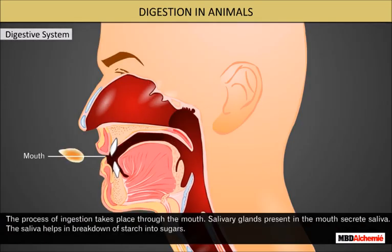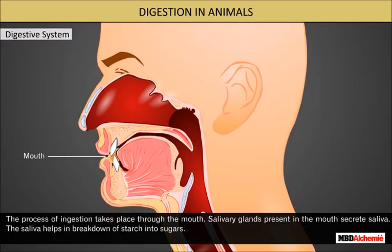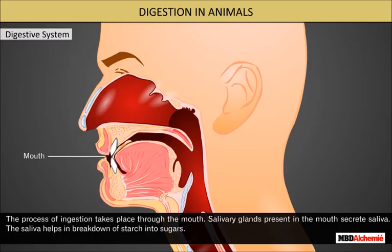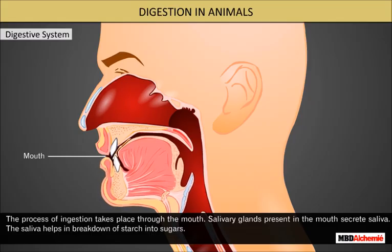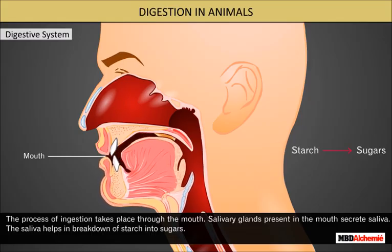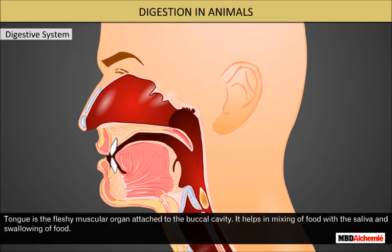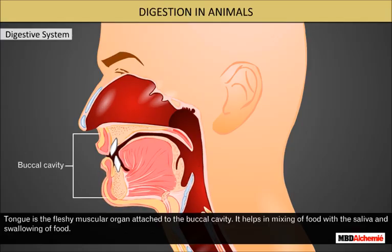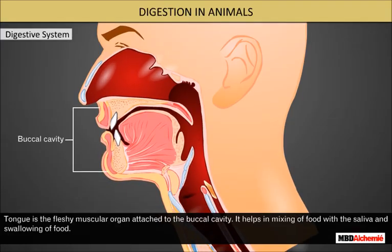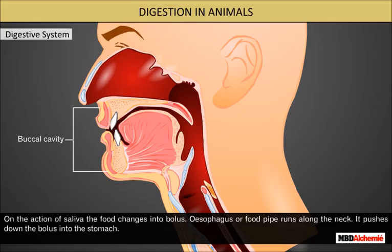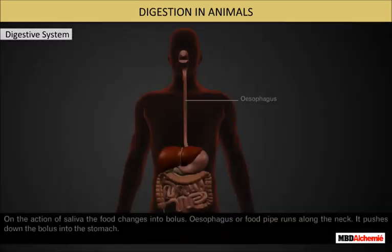The process of ingestion takes place through the mouth. Salivary glands present in the mouth secrete saliva. The saliva helps in the breakdown of starch into sugars. The tongue is a muscular organ attached to the buccal cavity; it helps in mixing food with saliva and swallowing of food. On the action of saliva, the food changes into bolus. The esophagus or food pipe runs along the neck.